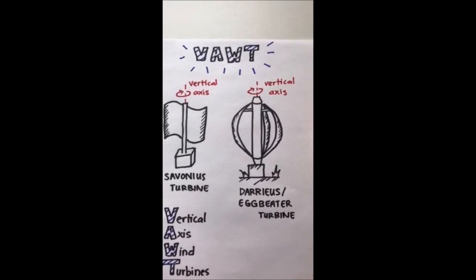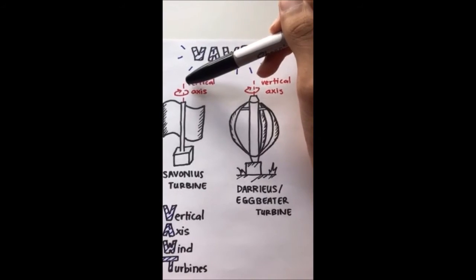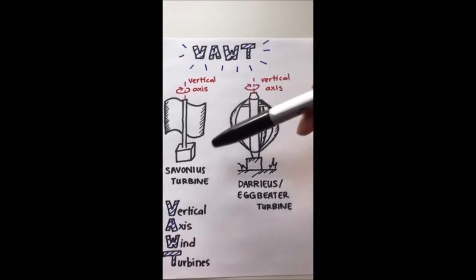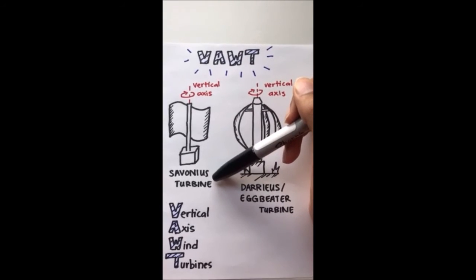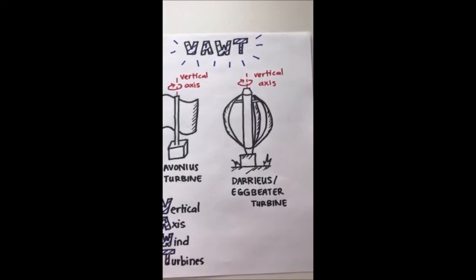Then we have the VOTs. VOTs rotate about an axis that is vertical to the ground and operate on either lift or drag force depending on the model. The Savonius turbine is a primary example of a drag-type VOT, and the Darrieus or Eggbeater turbine is an example of a lift-type VOT.